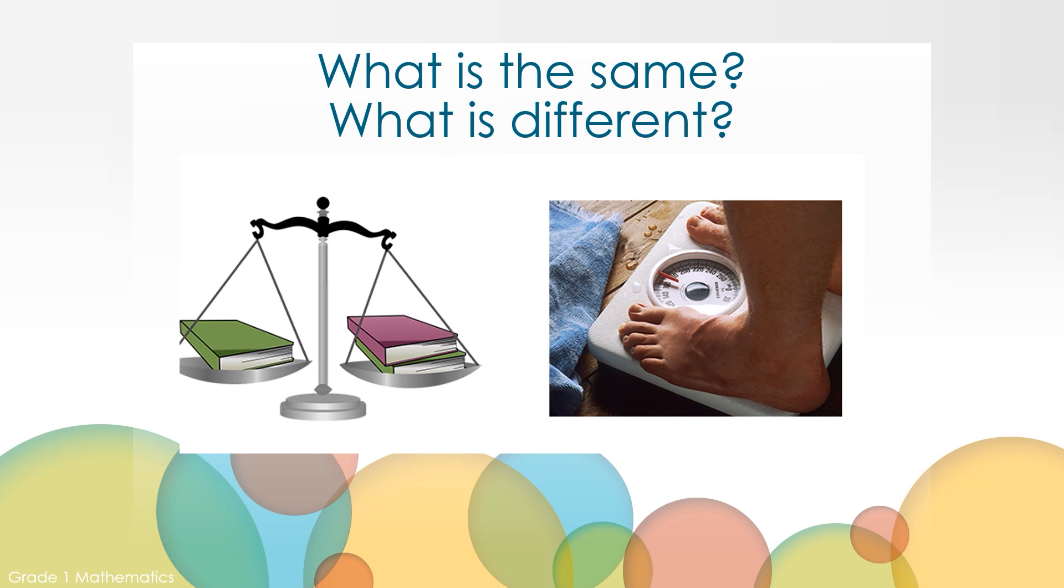Let's get our brains thinking about measuring weight by taking a moment to look at these two pictures. Practice being a communicator by sharing your thoughts out loud. What is the same and what is different about these two pictures? Maybe you notice that these are both scales and they are weighing objects. One scale is weighing books and the other scale is weighing a person. Maybe you also notice that these are two different types of scales.